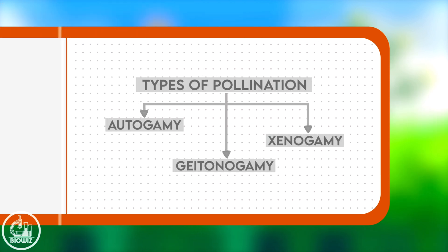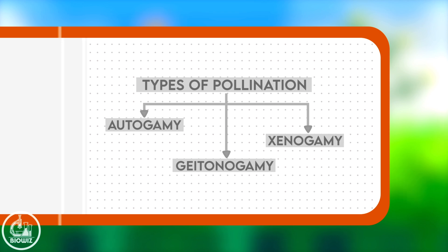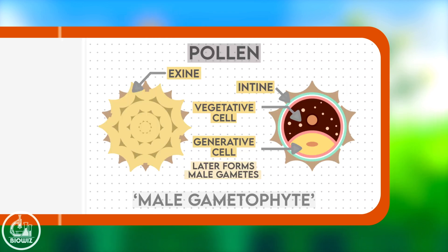Based on the source of pollen, pollination can be divided into three main types: autogamy, geitonogamy, and xenogamy.